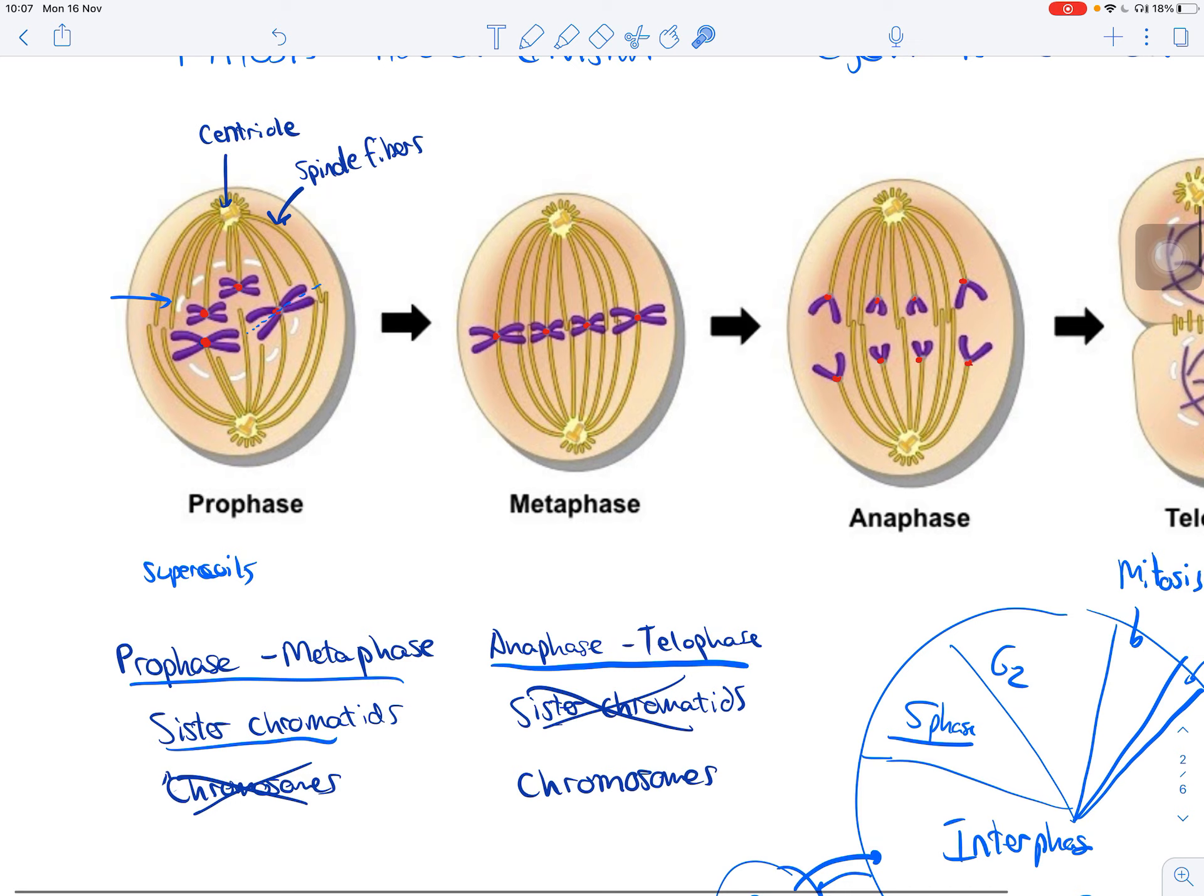So a couple of things here that happen, especially starting in prophase, is our centrials move to opposite sides of the cell. These spindle fibers come out from the centrial and they start to go towards the sister chromatids. And eventually what they're going to do is they're going to attach to the centromere there.